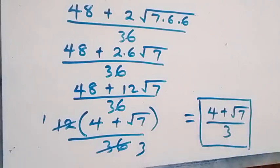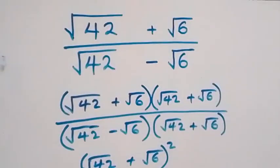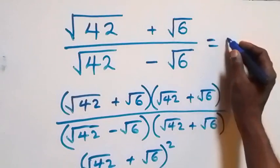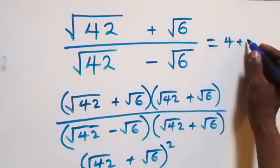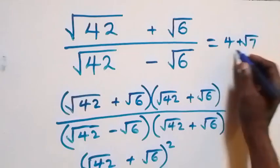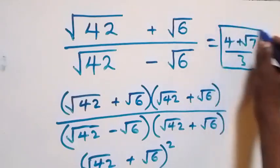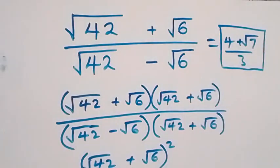This is the same thing as what we got in the first method. Therefore the answer is (4 plus root 7) over 3. Thank you for watching — don't forget to subscribe for more videos and turn the notification bell on. Share this video, give it a thumbs up, see you next class, bye for now.